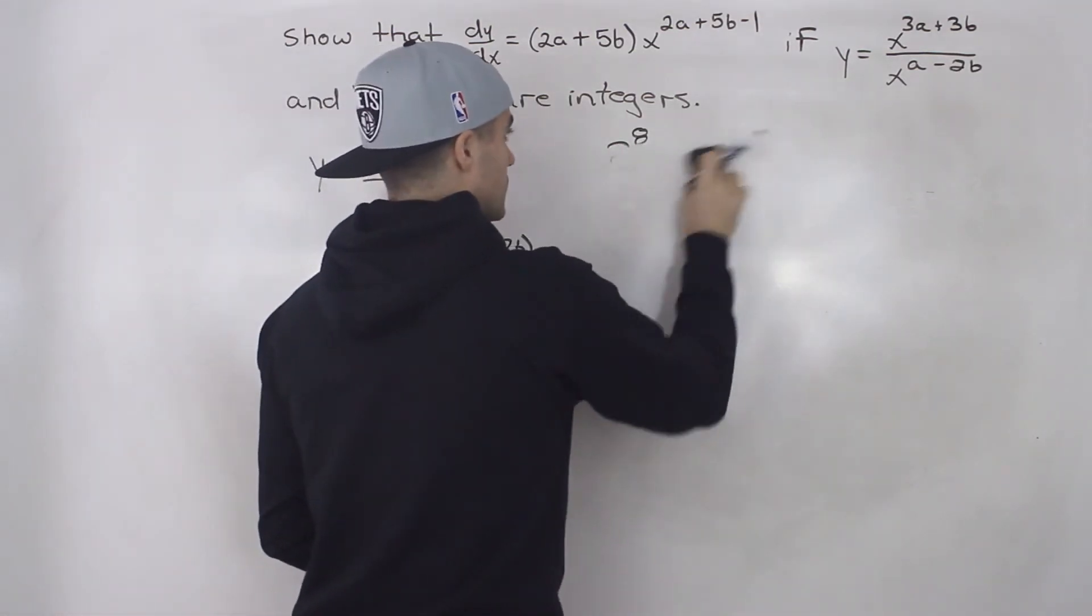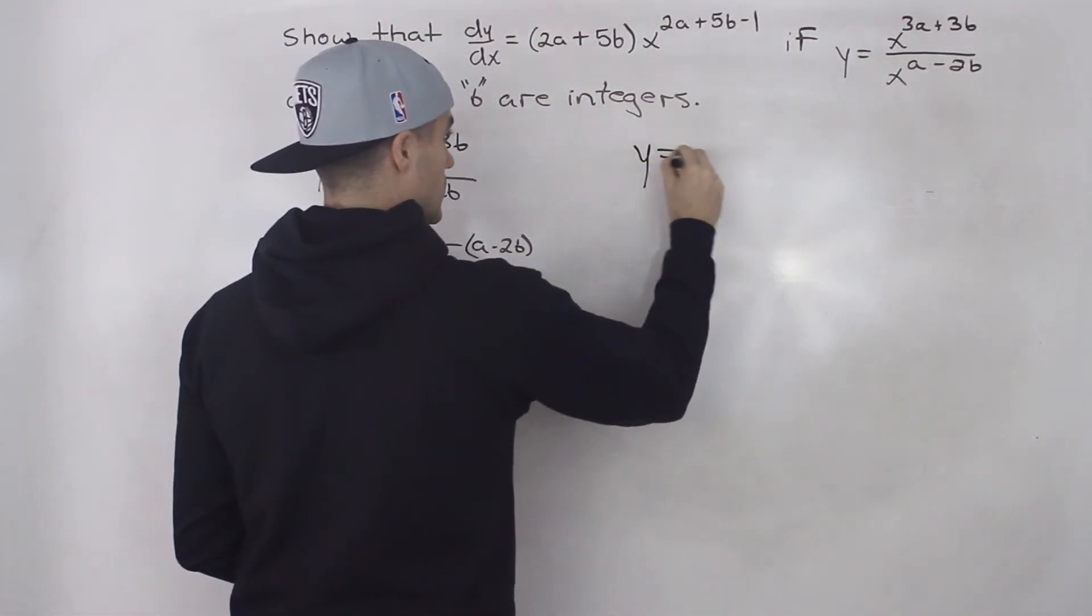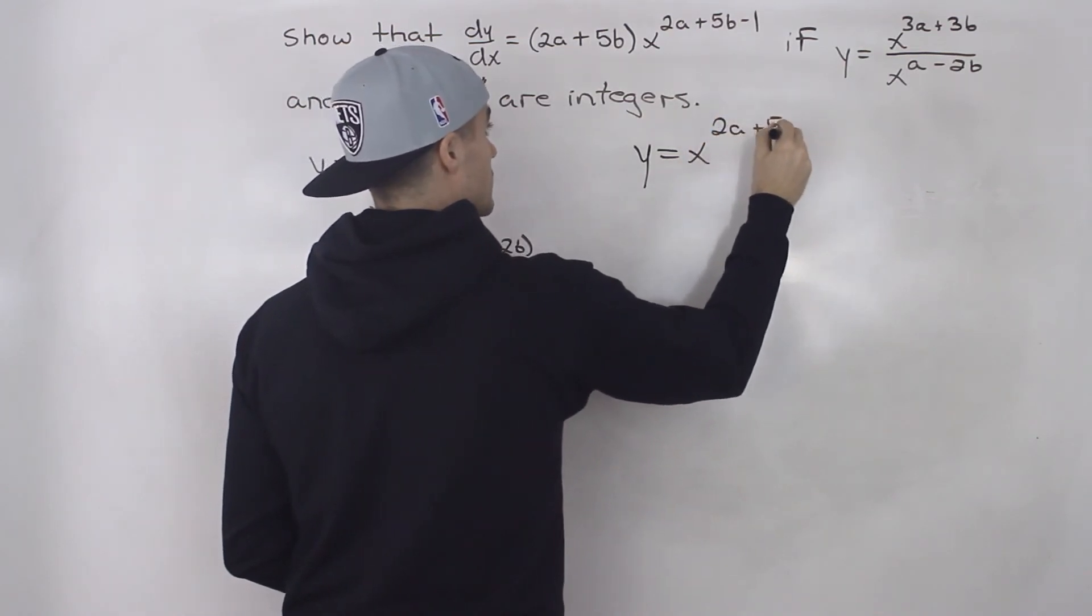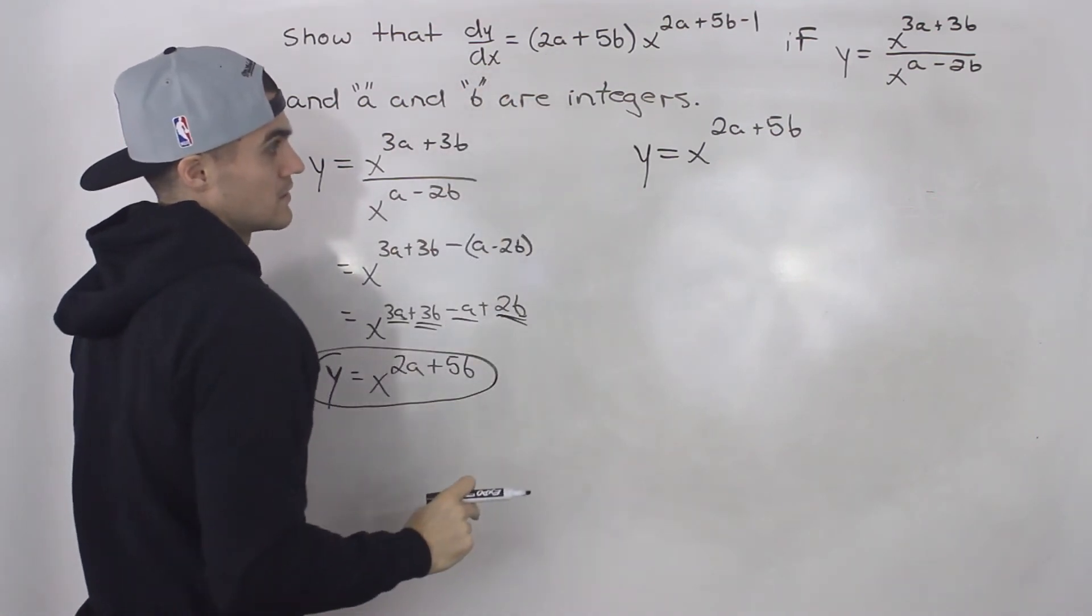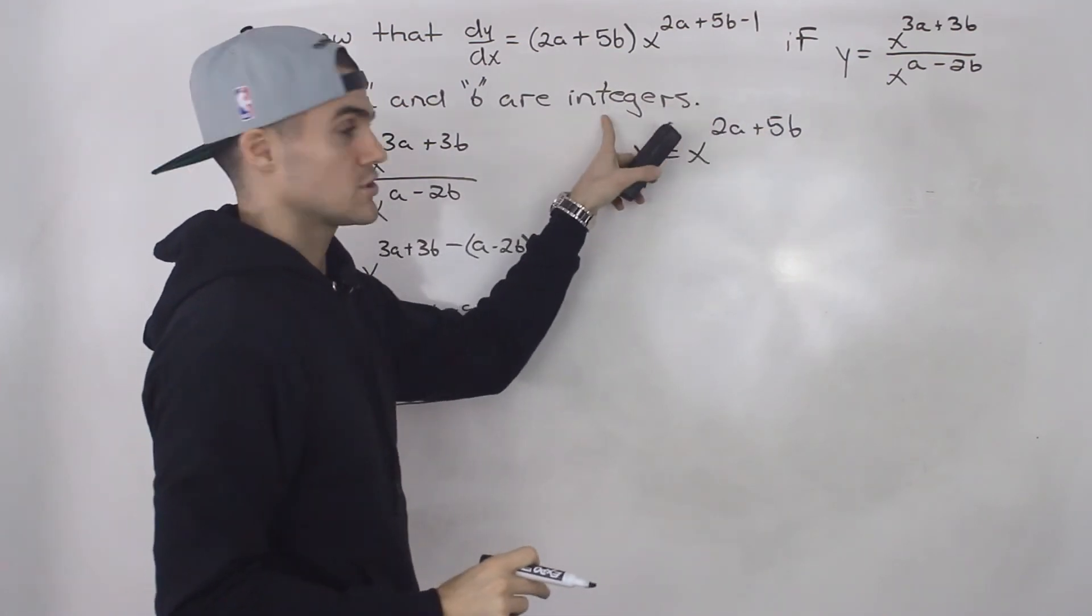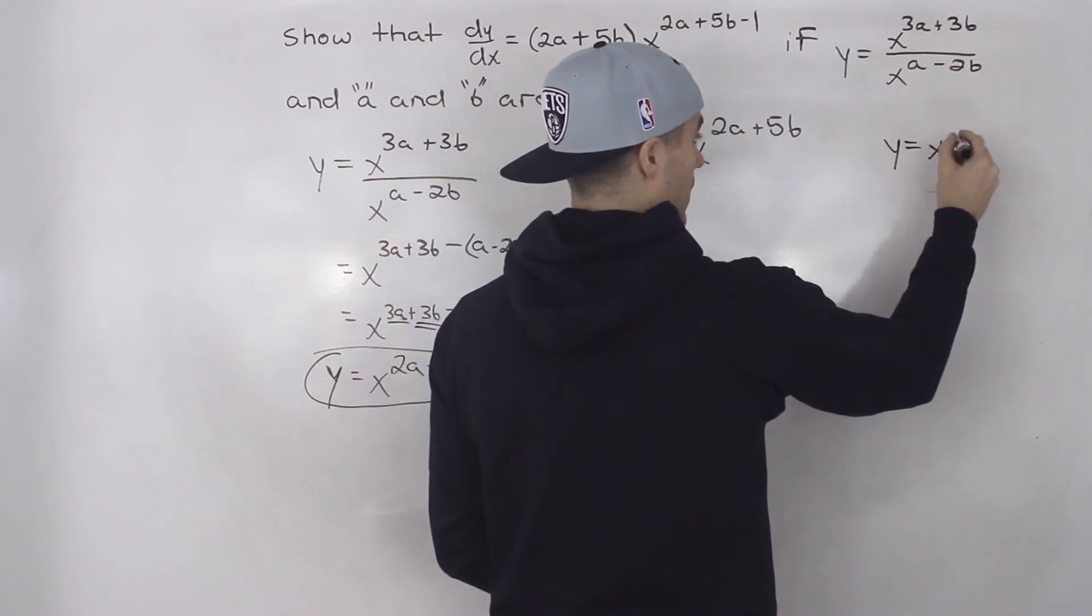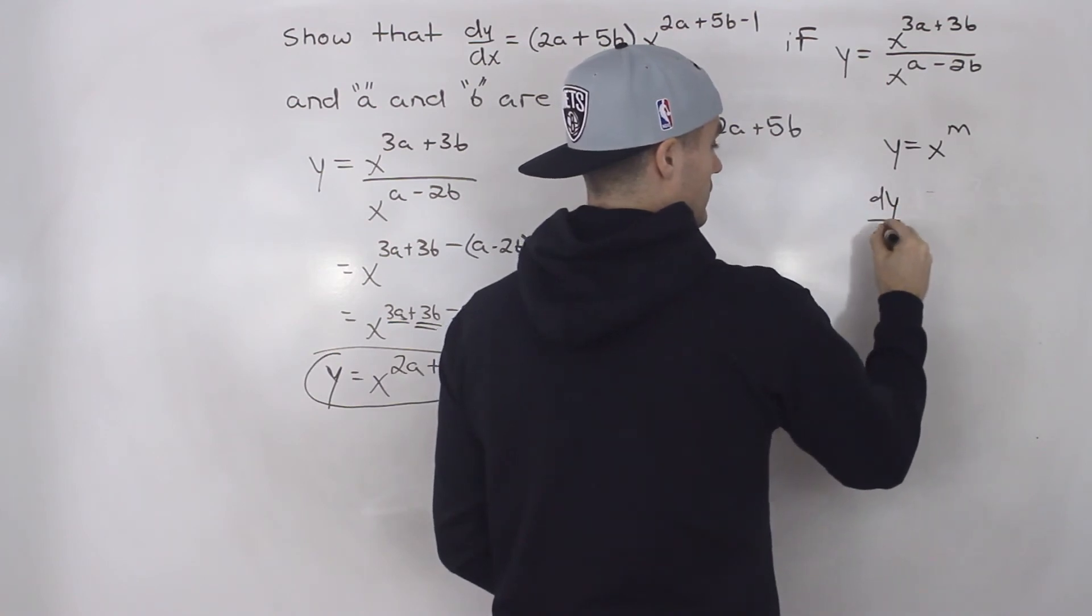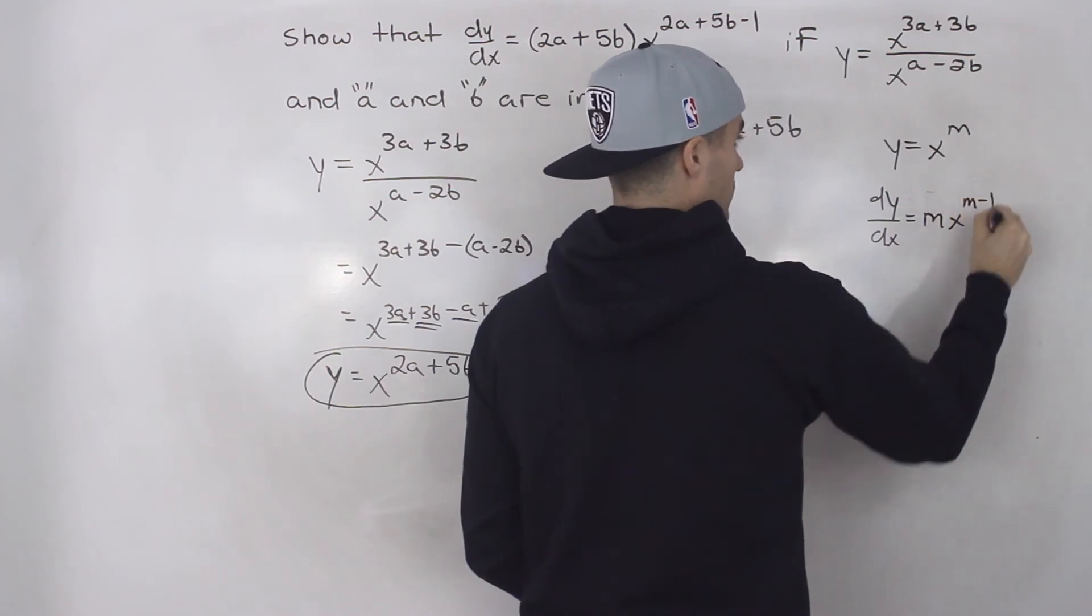Now what we got to do is take this function. Let's rewrite it: y equals x^(2a + 5b). We have to show that the derivative of it is this. Notice how it's x to the power of a number because a and b are integers. We know that if we have a function x^m, then the derivative of it we just bring that constant down and then subtract 1 from the exponent.